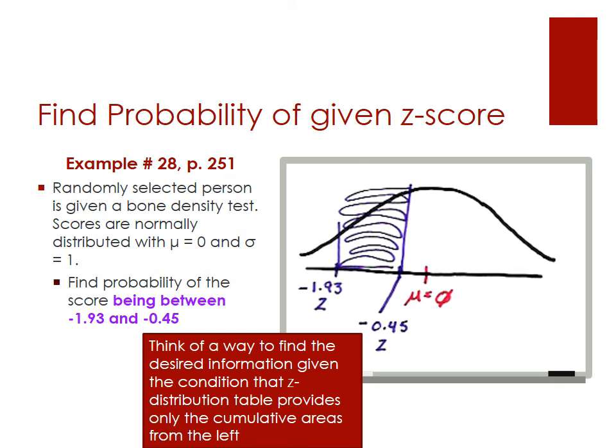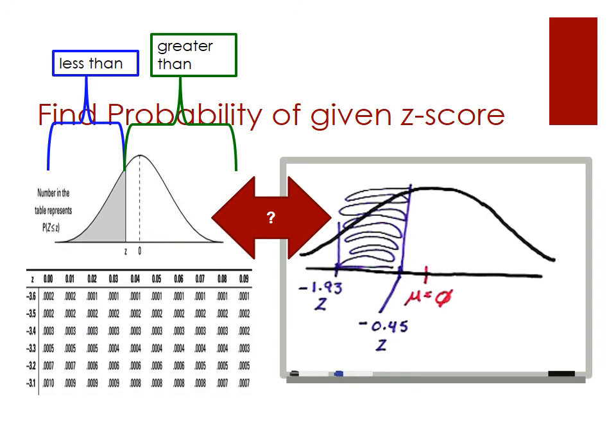Your graph should show the distribution with both Z-scores marked and the shaded area between them, since we're solving for the area between two values. This becomes a little more complex because the Z distribution table only provides cumulative areas from the left, so we're going to have to do some careful computations to work around that.